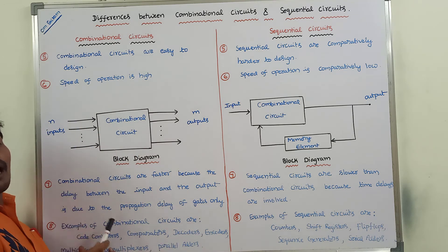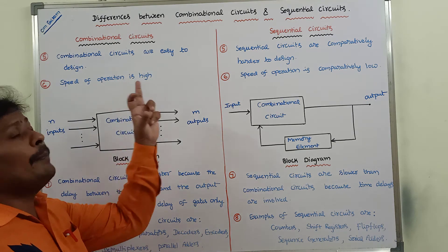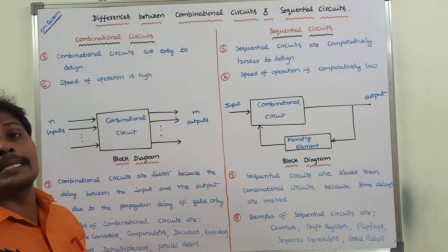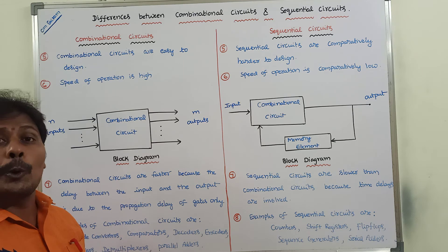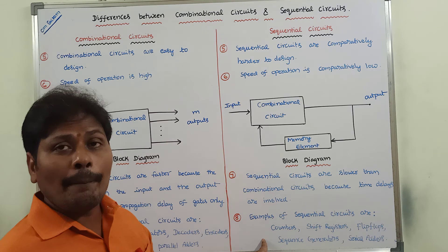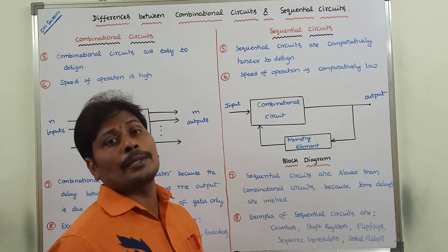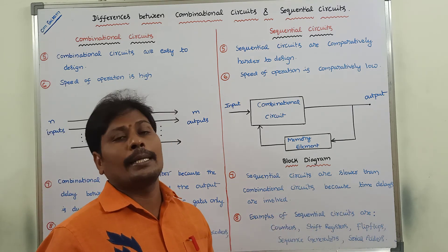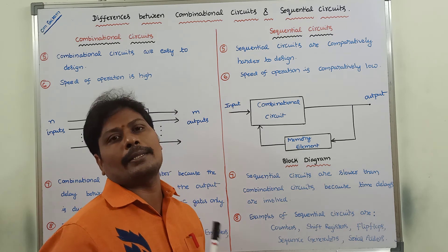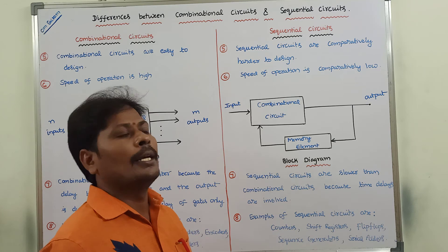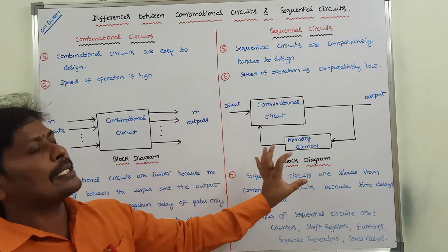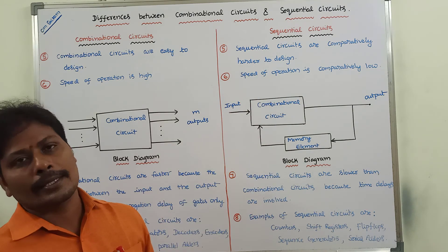Seventh point — examples of combinational circuits: decoders, encoders, multiplexers, demultiplexers, code converters, comparators, etc. Examples of sequential circuits: counters, shift registers, sequence registers, sequence generators, flip-flops, and serial adders. These are the examples of sequential circuits.